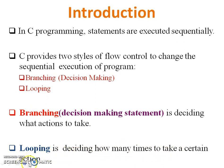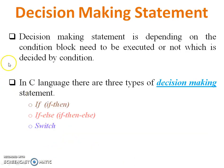Decision making statement depends on the condition block that needs to be executed or not, which is decided by the condition. In C language there are three types of decision making.